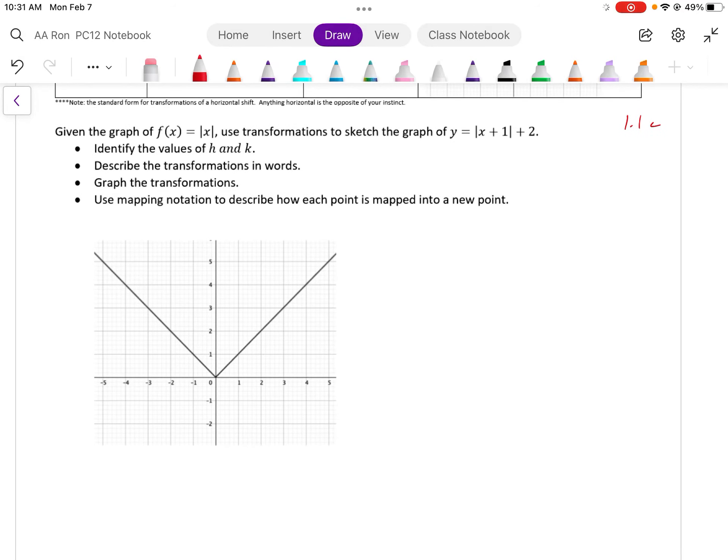Given the graph of f(x) is equal to the absolute value of x. So this is my graph f(x), and that is equal to the absolute value of x. We're going to use transformations to sketch the graph y equals the absolute value of x plus 1, close the bracket, plus 2.